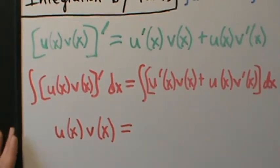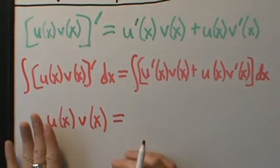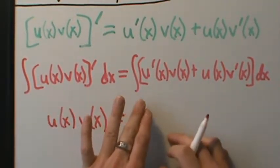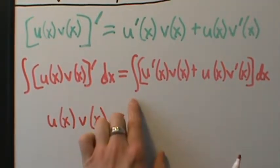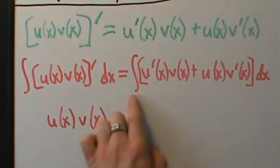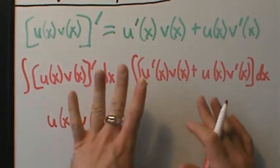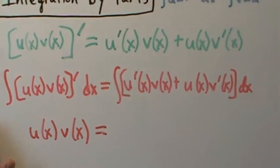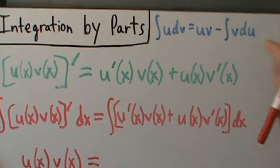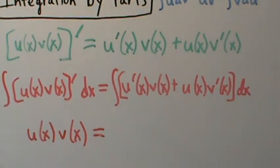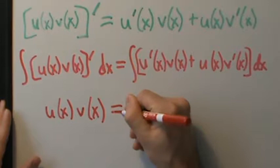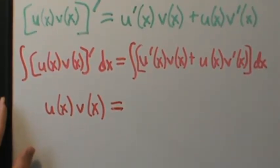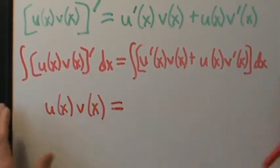Equals... now you might be thinking, isn't there supposed to be a plus c? And yes there is, but there's also going to be a plus c from the integral on the right side. So we'll just do it once later — it's actually going to be absorbed into the formula. So now let's go ahead and split this integral up into two.